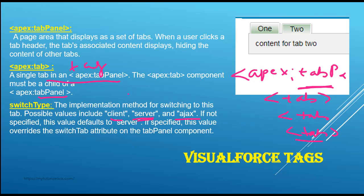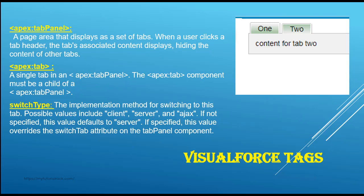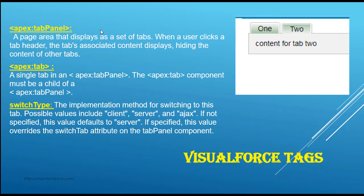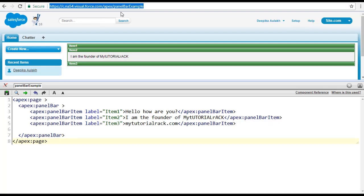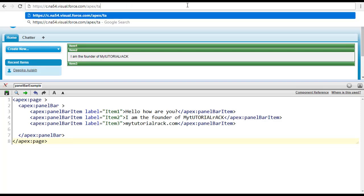Let's go ahead and create a similar UI and do an example. We're going to go back to our developer console, and this time let me go ahead and create an example — we'll call it tab example.